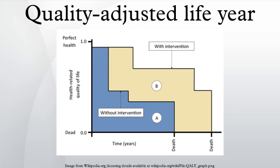The concept of the QALY is credited to work by Klarman, and later Fanshel and Bush and Torrance, who suggested the idea of length of life adjusted by indices of functionality or health. It was officially named the QALY in print in an article by Zeckhauser and Shepard.